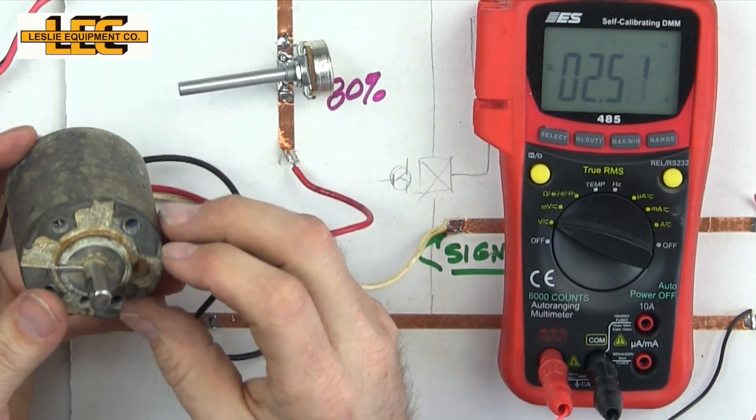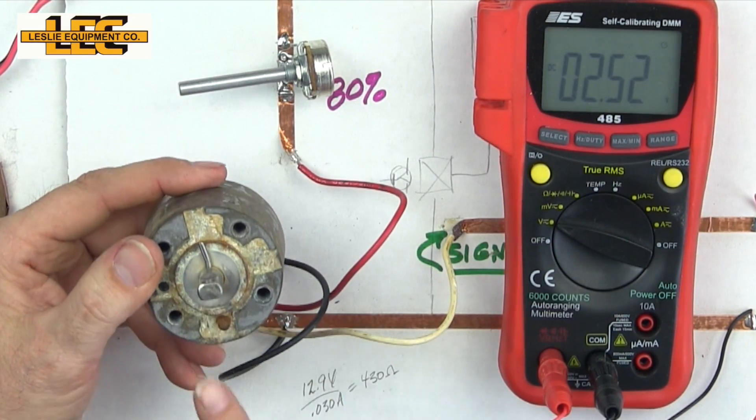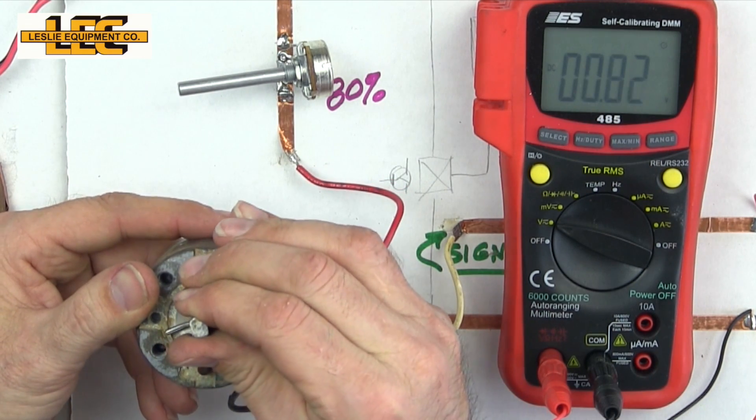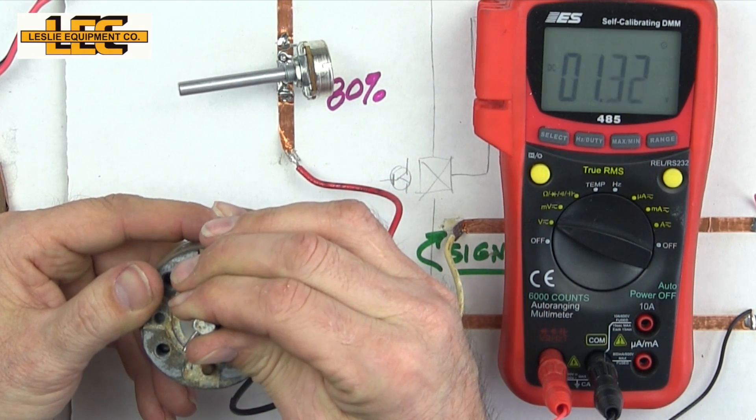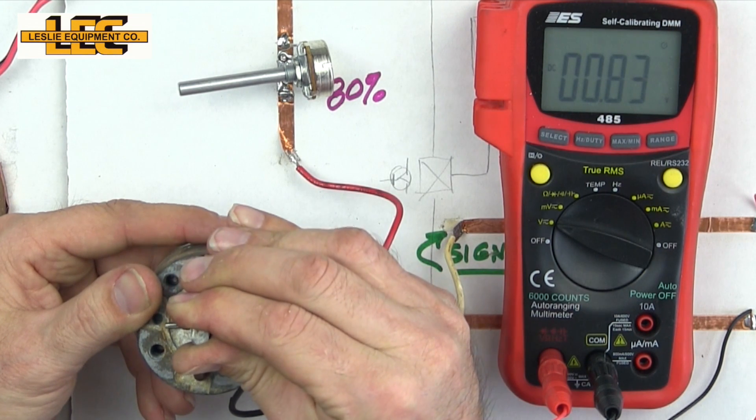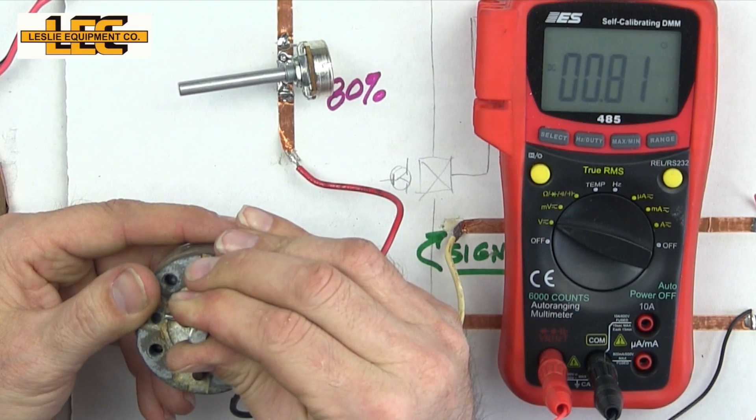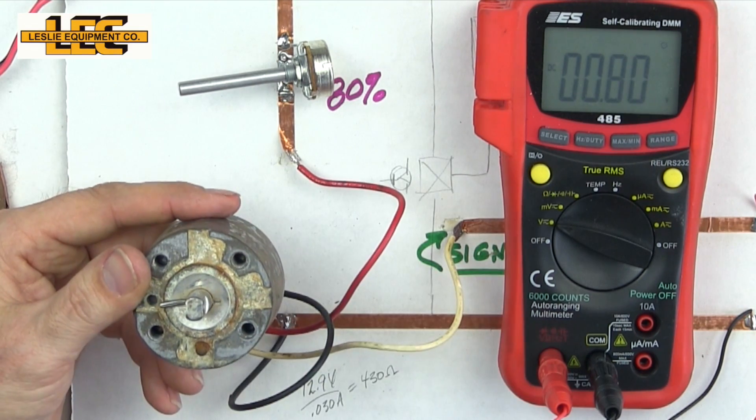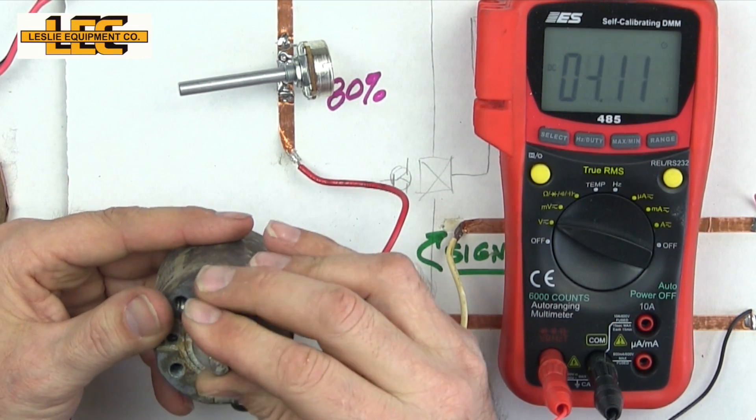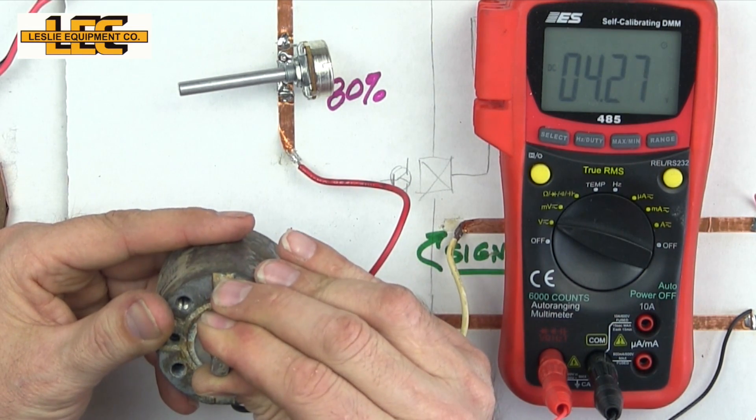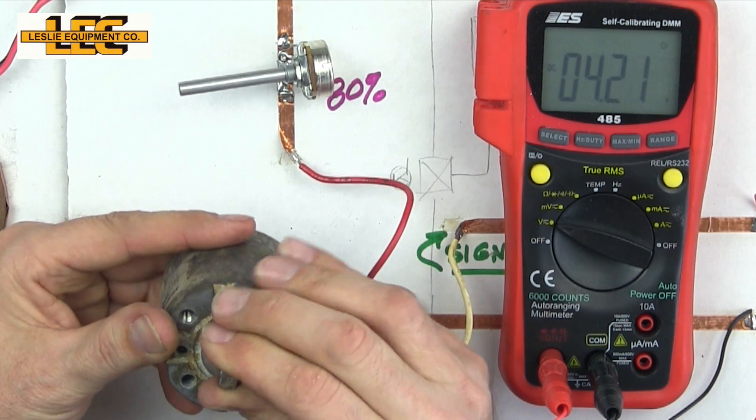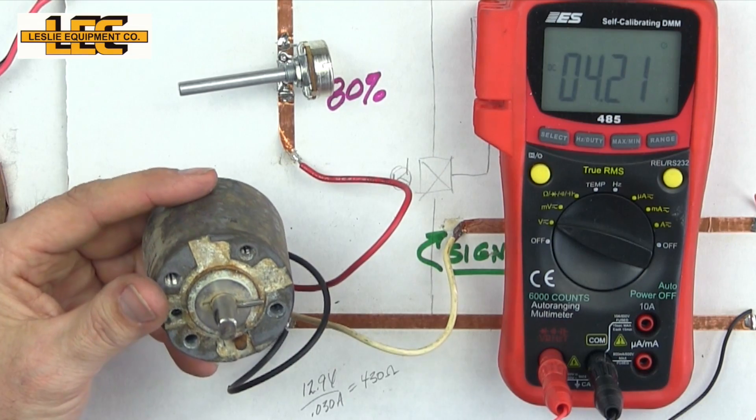If I go all the way this way, I get eventually I'll get a low number of about 0.8. And then if I go all the way over here I get a high number of four point two.